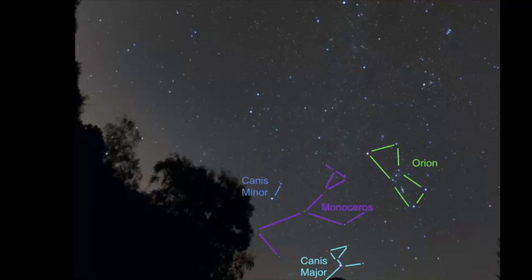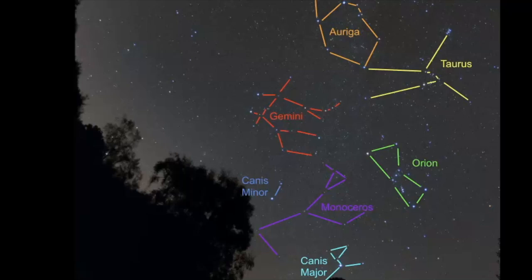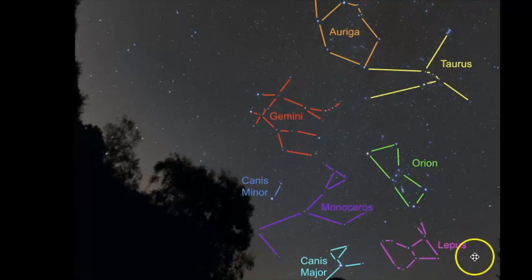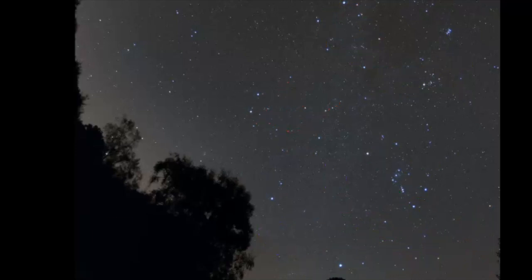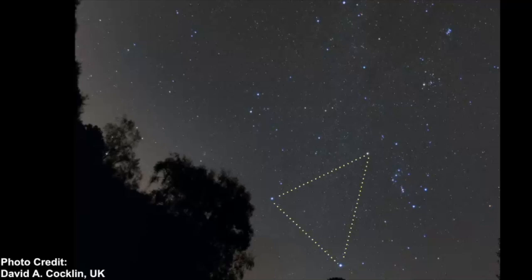From the winter triangle, you can start to work your way around the sky. Moving into the winter hexagon, here's where Gemini is, then Auriga, and then Taurus — these six constellations' brightest stars connect to make the hexagon pattern. There's also Lepus down here, a cute little constellation represented as a hare. I'd say the triangle is easiest to spot first, and when you get comfortable using it, you can graduate to finding the larger winter hexagon.